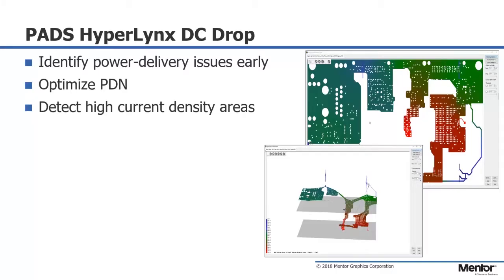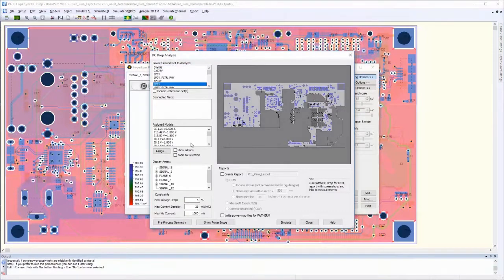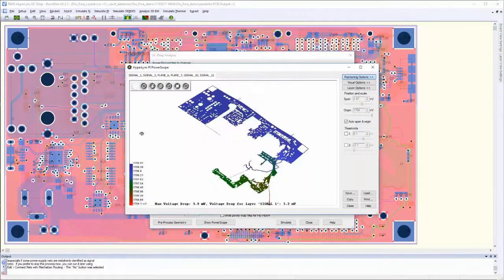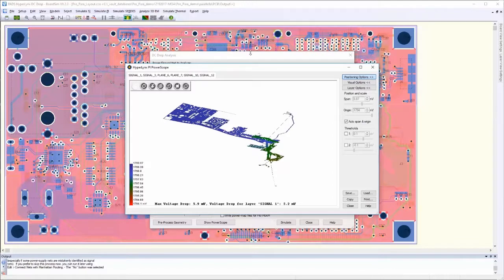PADS HyperLynx DC drop. The tool helps analyze power networks. The user can model various DC sinks and VRM models and make sure all the ICs receive minimum voltage required for proper function. You can also look for hot spots for high current areas. This becomes important with large power distribution networks that are Swiss cheese, so to say, with all these high density interconnects.